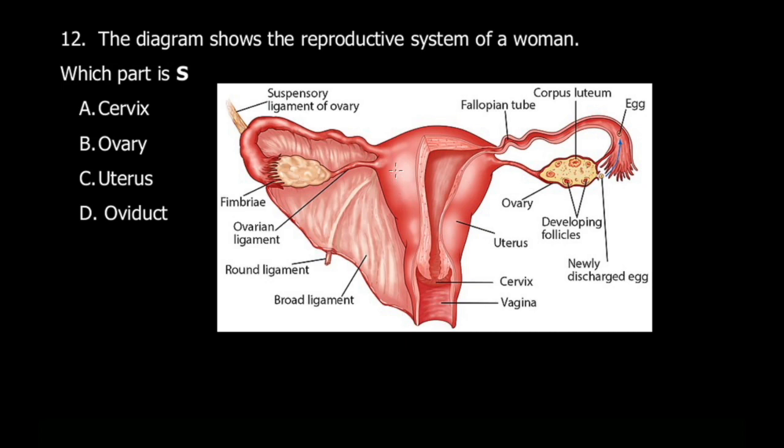The uterus is this one here, it's a very thick wall. The cervix is this part, and the vagina is actually this part here. The ovaries, you see these ones? Those are the ovaries.